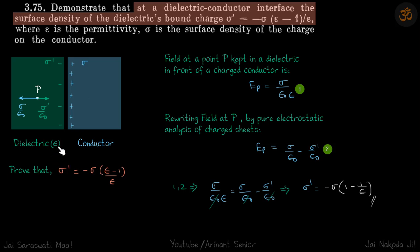We are given a dielectric and a conductor. It is given that surface charge density on the conductor is sigma, and the surface charge density on the dielectric adjacent to the conductor is sigma dash. We need to prove that the relation between sigma dash and sigma is: sigma dash equals minus sigma times (epsilon minus 1) divided by epsilon, where epsilon is the relative permittivity of the dielectric.